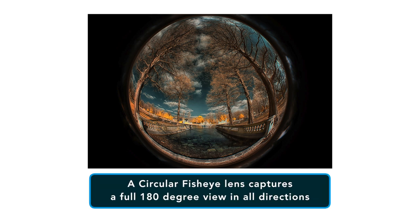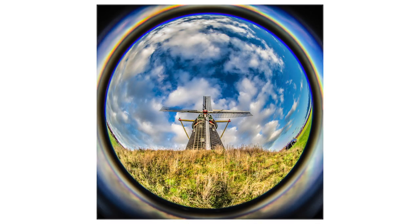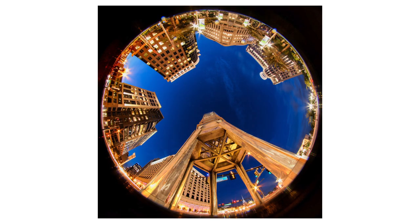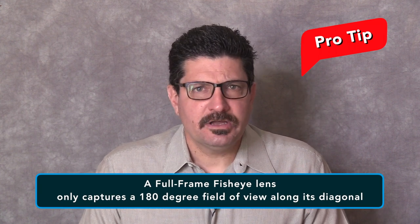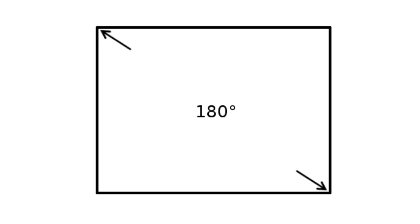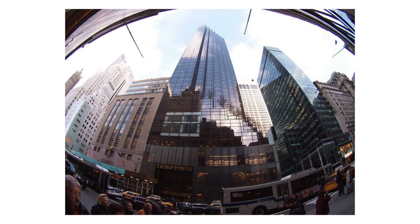A circular fisheye lens is one which captures a full 180 degree view in all directions. This results in a circular image with the edges of the frame being black. These more extreme fisheye lenses tend to be used for artistic purposes such as skateboard photography or for shooting unusual landscapes or cityscapes. A full-frame fisheye lens only captures a 180 degree view along its diagonal. The field of view along the horizontal and vertical sides of the image are less than 180 degrees, typically around 150 degrees for the horizontal and 100 degrees for the vertical. Although they do not cover such a wide angle, photos taken using a full-frame fisheye lens are rectangular and do not have black edges.